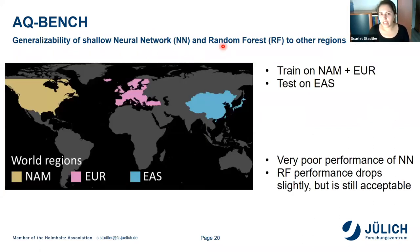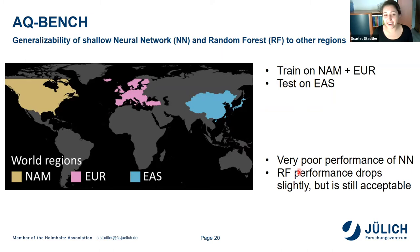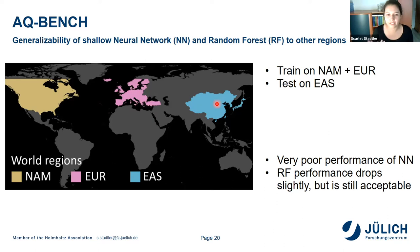To test generalization to unseen regions, we divided the dataset into three world regions: North American, European, and East Asian. We trained on two regions and tested on the third. The neural network did a very bad job at this — the R² even went below zero. The random forest's performance also dropped, since East Asian data may not be perfectly characterized by European data, but it remained acceptable. These results led me to my research question: why does the random forest outperform the shallow neural network?